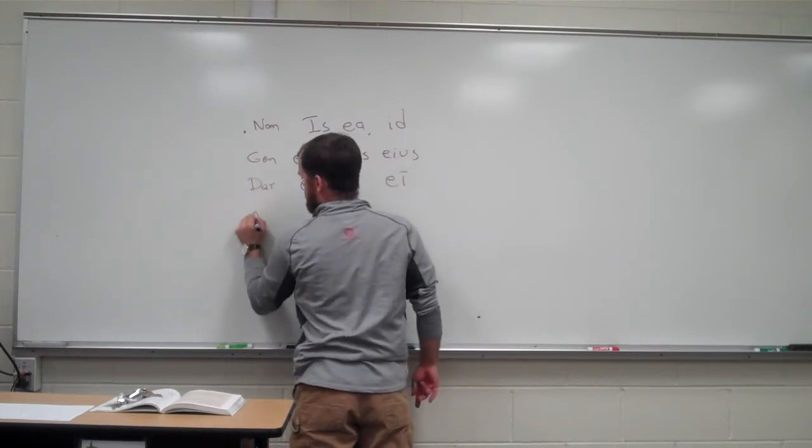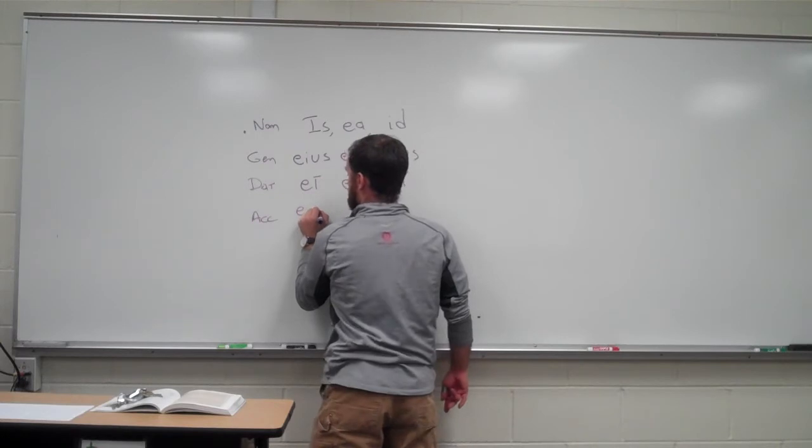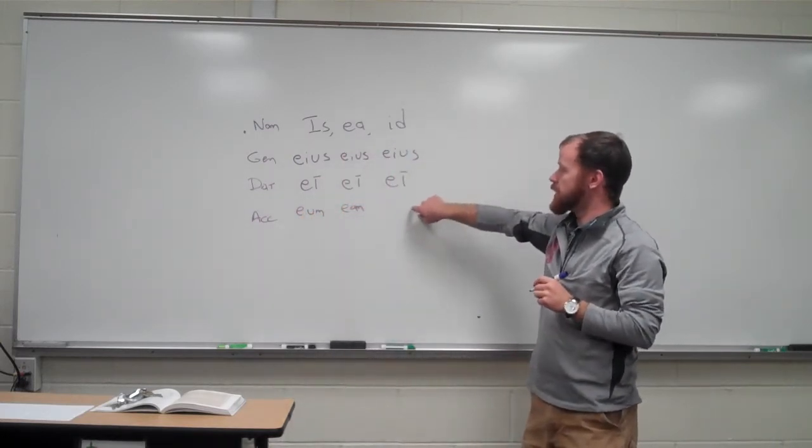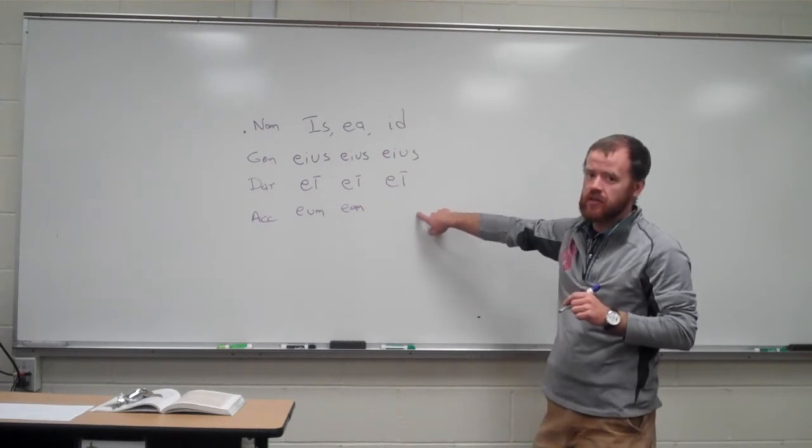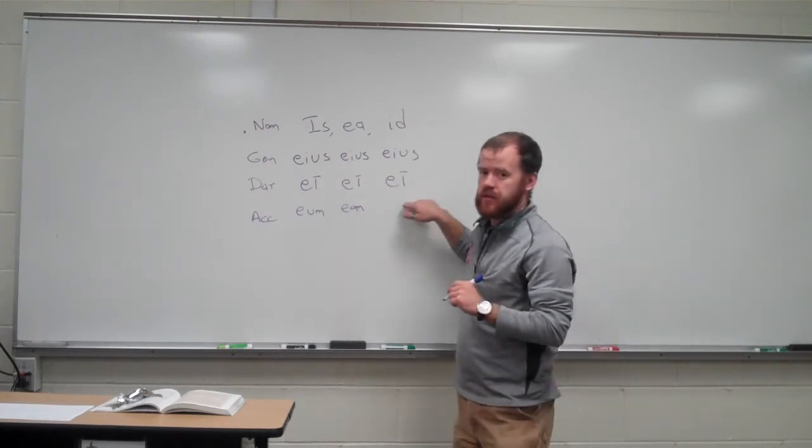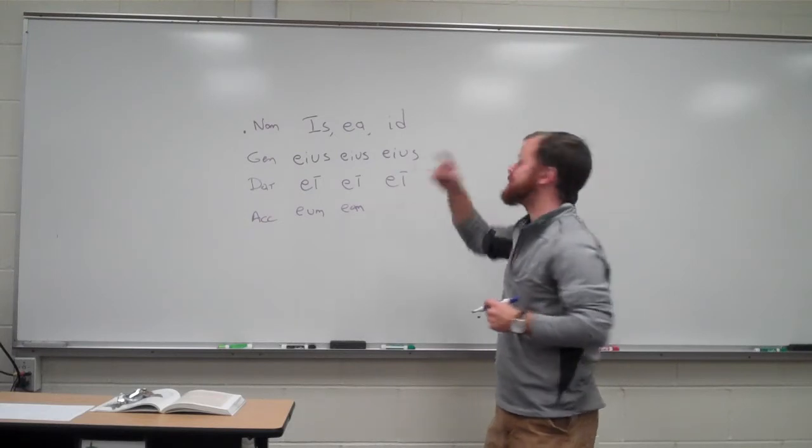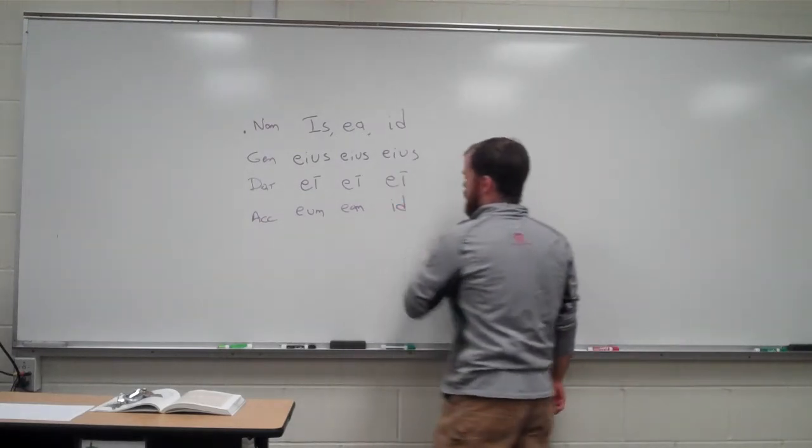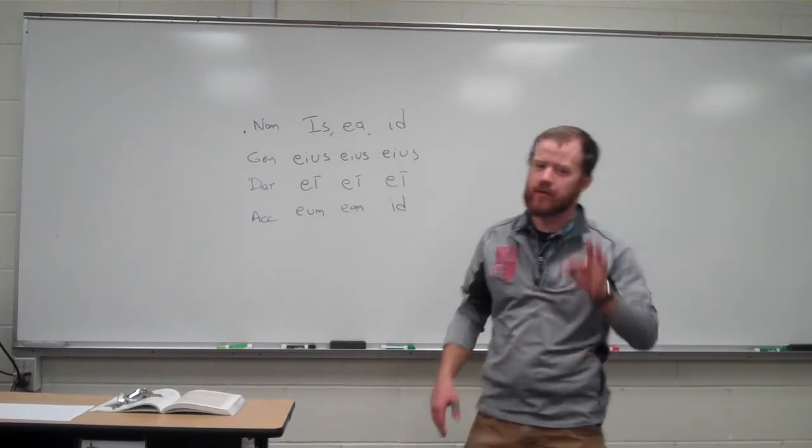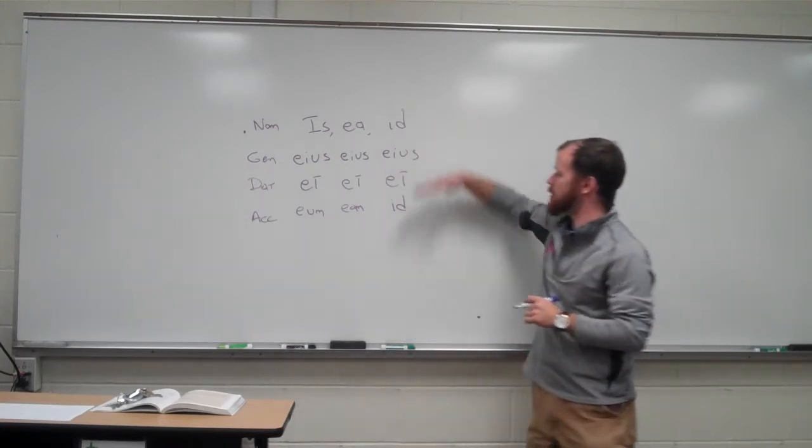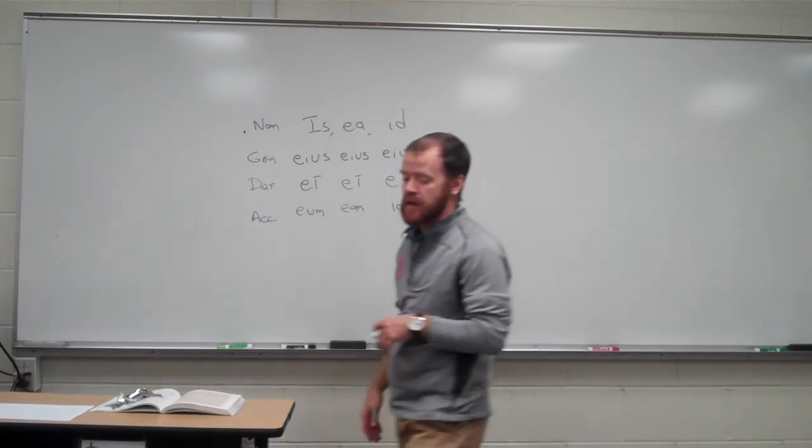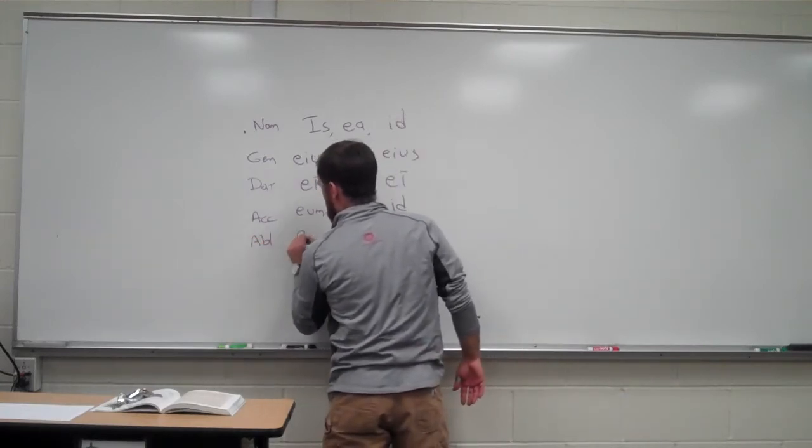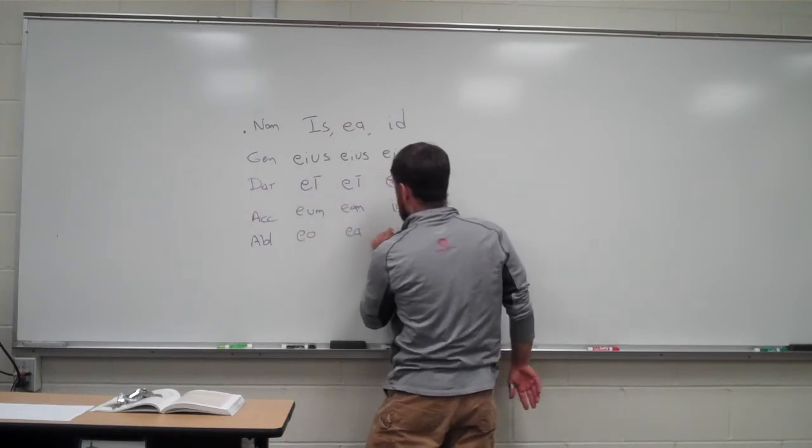Now we have the accusative, eum, eam. And remember in our neuter rule, what is going to appear for the accusative singular of the third person pronoun? Hopefully you said an id. I know some of you probably are like, oh, it's going to be eum. But no, it's id. Because remember, the nominative and the accusatives have to be the same. And then we have in the ablative, eo, ea, eo.